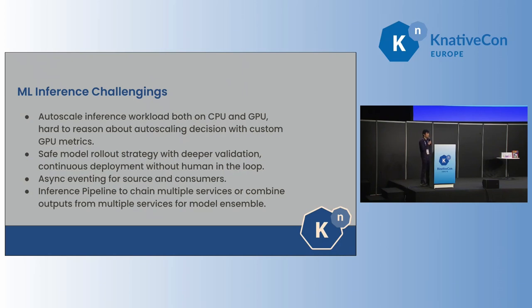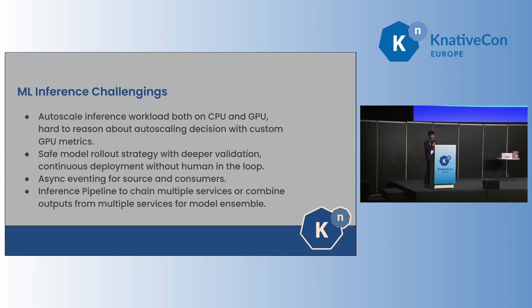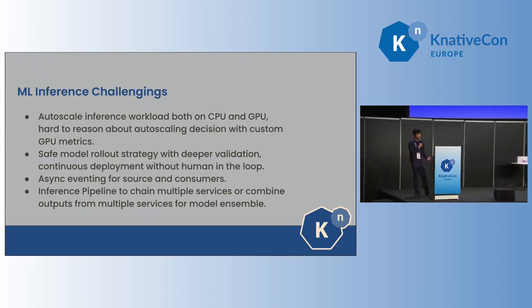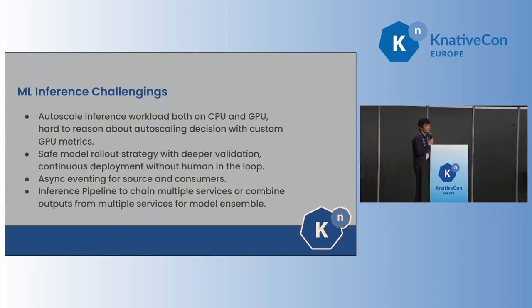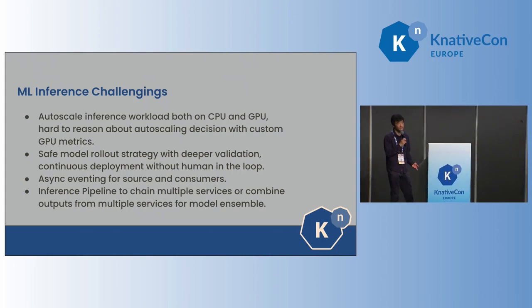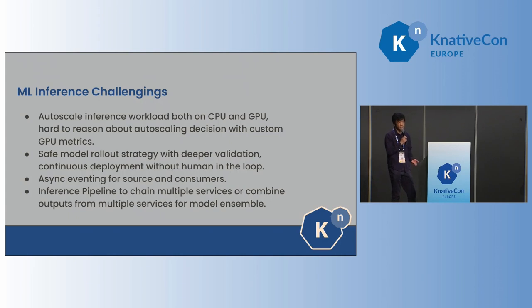Besides the common infrastructure challenges of deploying cloud microservices, we also have unique challenges for deploying ML inference services. First, we want to enable autoscaling of inference workloads on both CPU and GPU. The default Kubernetes HPA does not support autoscaling based on GPU. To support that, you need to implement HPA with custom metrics based on GPU metrics like duty cycle, power consumption, and GPU memory, which can be really hard to reason about for autoscaling decisions. We are looking for a solution that works the same way on both CPU and GPU.